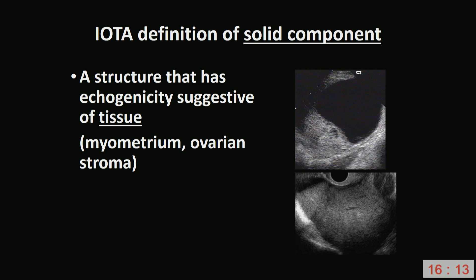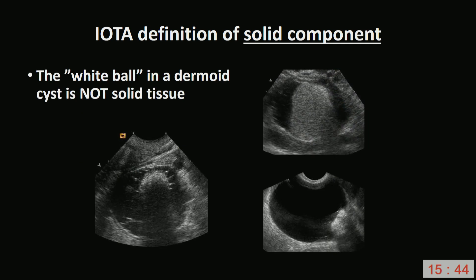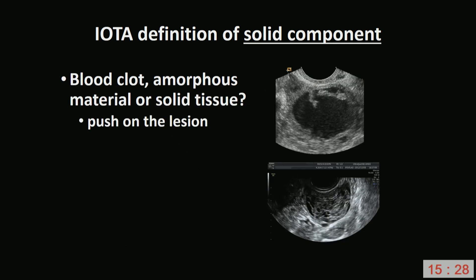The IOTA definition of a solid component is extremely important, because if you do not get this right, the IOTA methods will not work in your hands. A solid component is a structure that has echogenicity suggestive of tissue, such as myometrium or ovarian stroma, and all tissue is potentially vascularized. This means the round white ball in a dermoid cyst consisting of hair and sebum should not be classified as a solid component, because it is not tissue that can be vascularized. A blood clot or a lump of mucus should also not be classified as a solid component.